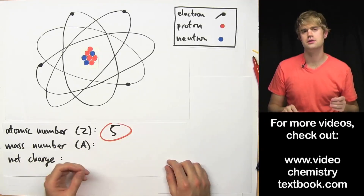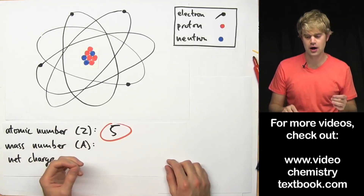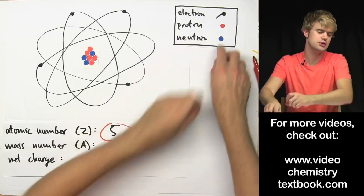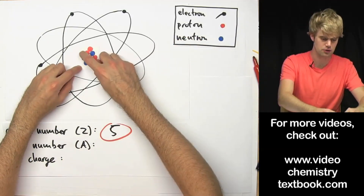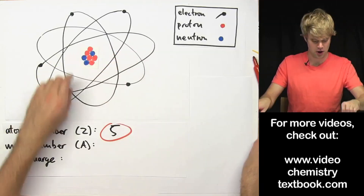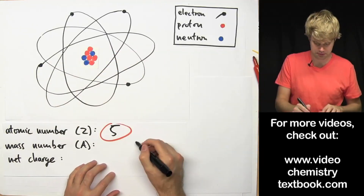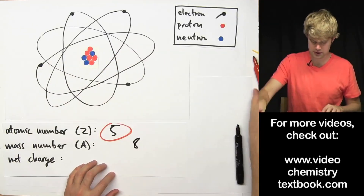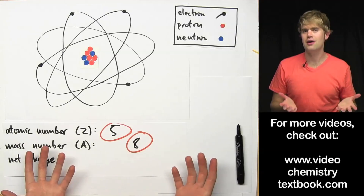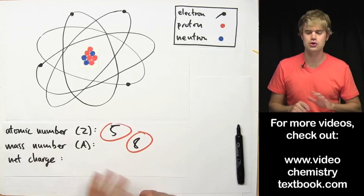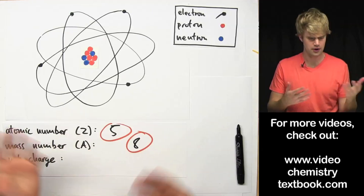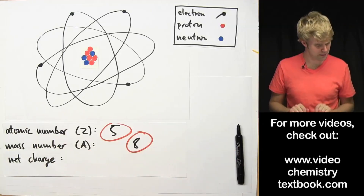Mass number is the number of protons plus the number of neutrons, which are these things in blue. So the mass number is 1, 2, 3, 4, 5, 6, 7, 8 — protons plus neutrons — so mass number is 8. Sometimes people think you have to have the same number of protons and neutrons in the nucleus of an atom. Definitely not true — they can differ quite a bit.